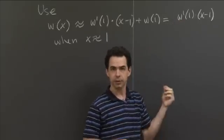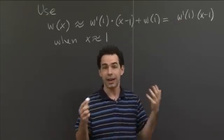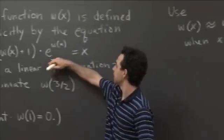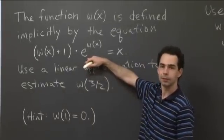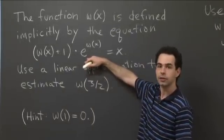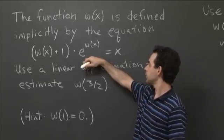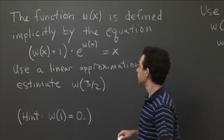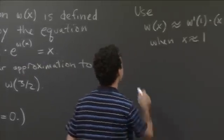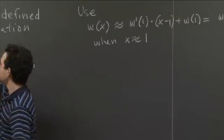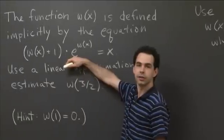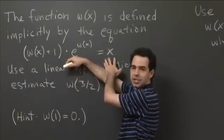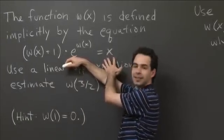To get the derivative of w, we only have one piece of information about w: it's defined by this implicit equation. So in order to get the derivative of w, we have to use implicit differentiation. Let's do that — we'll implicitly differentiate the equation with respect to x.